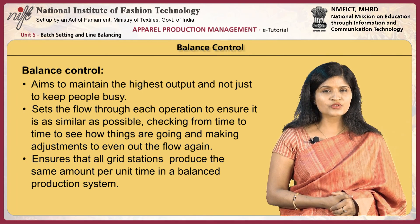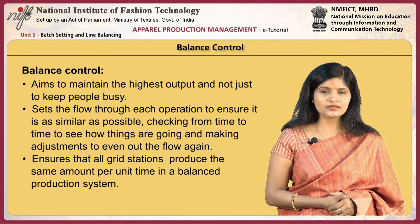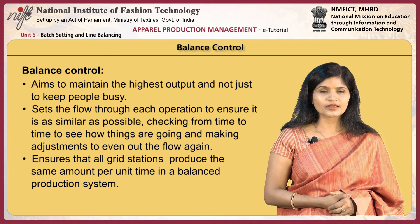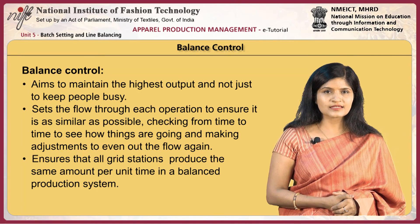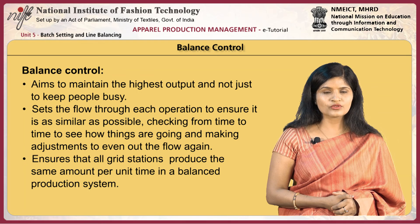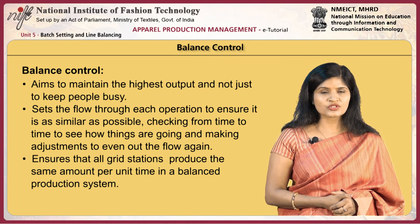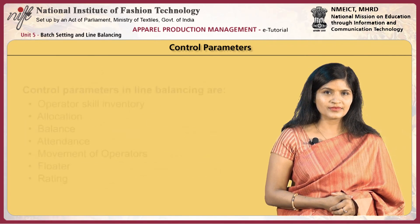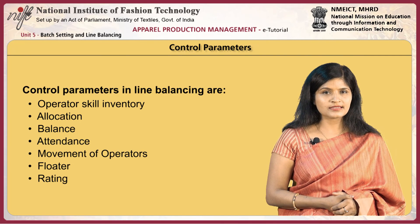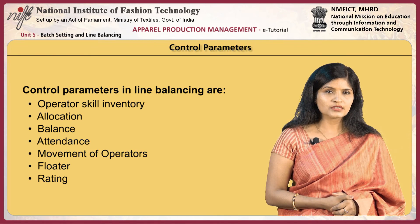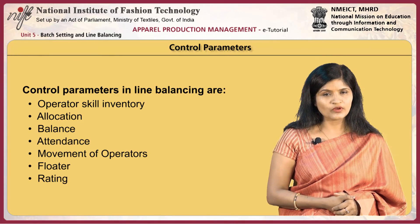Balance control is perhaps the most vital skill of the supervisor, whose objective is to maintain the highest output — not simply to keep people busy. This means setting the flow through each operation to be as similar as possible, checking periodically and making adjustments to even out the flow. All grid stations will produce the same amount per unit time in a balanced production system. Control parameters in line balancing include operator skill inventory, allocation, balance, attendance, movement of operators, floater, rating, pitch time, WIP, etc.